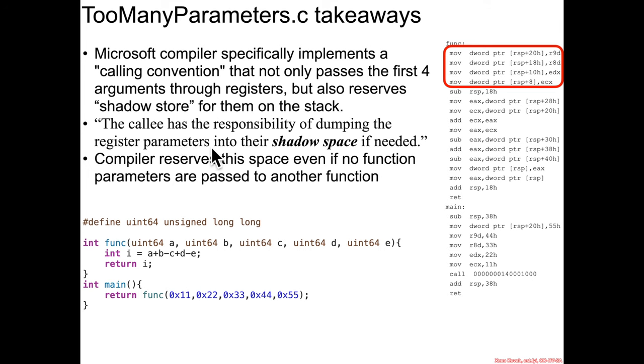the callee has the responsibility of dumping the register parameters into their shadow space if needed. So it's ultimately up to the callee, as we can see it's func reaching back up and placing the values into the shadow store if necessary.